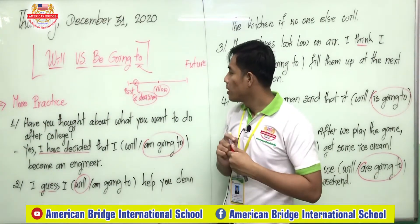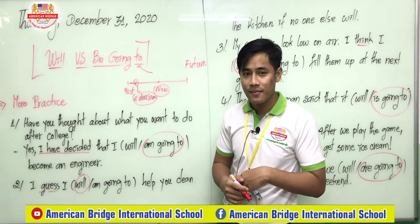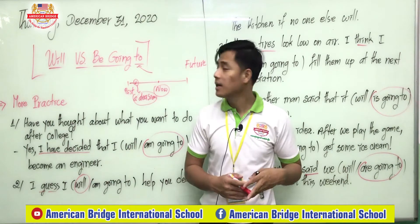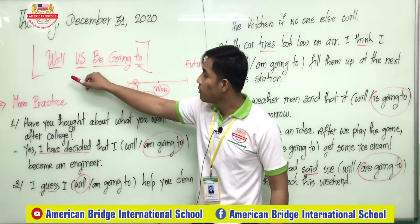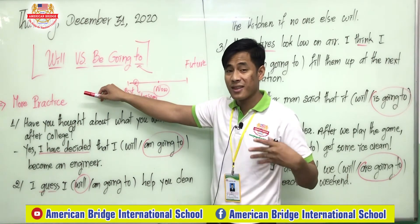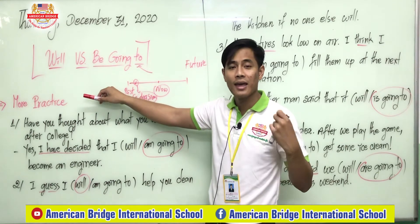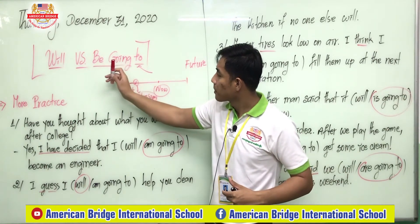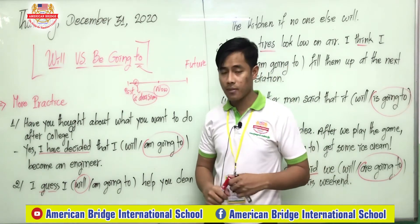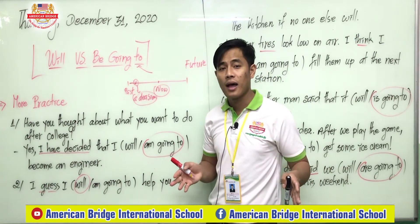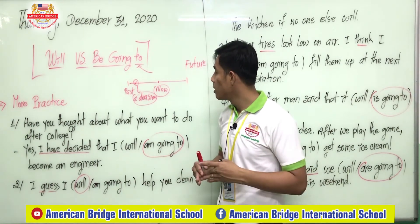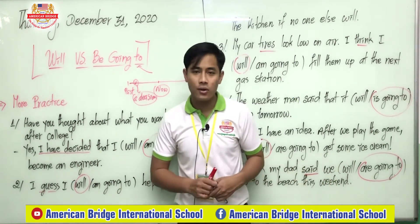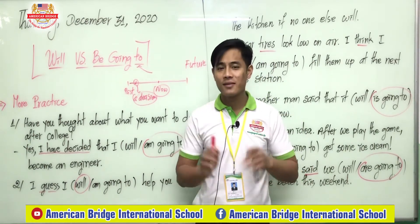That's all everyone. If you have questions, just leave them below the video and the teacher will answer your questions in the group. To summarize: we use 'will' to talk about a decision that is made at the time of speaking. We use 'be going to' to talk about a decision that we have already decided to do in the future. Thank you so much everyone. Goodbye, see you!